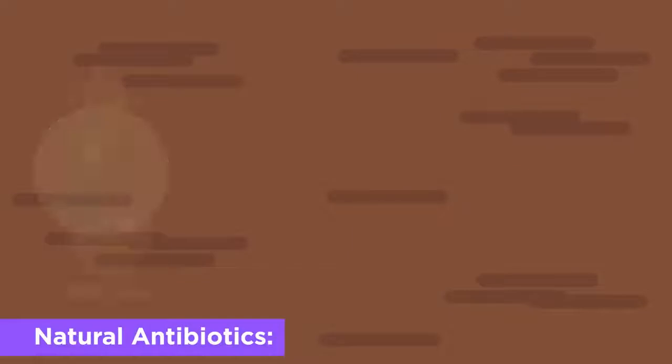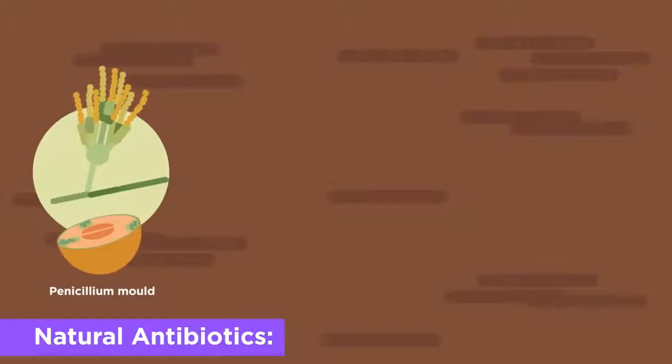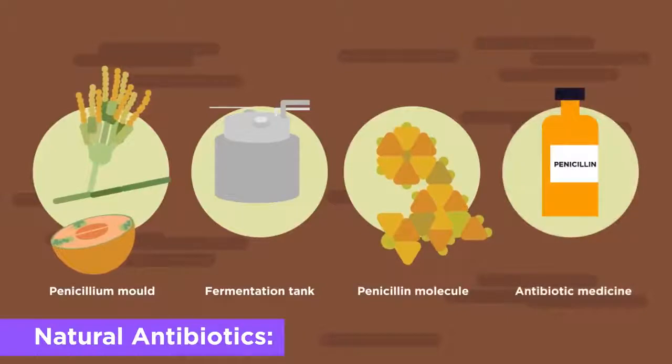Natural antibiotics. These are made by other organisms, such as fungi and other bacteria, like Fleming discovered. They are grown in huge colonies where the active substance is then extracted.